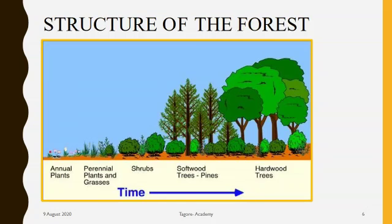Our next subtopic is the structure of the forest. Forest structure refers to the horizontal and vertical distribution of layers in a forest, including the trees, shrubs, vines, and grasses.